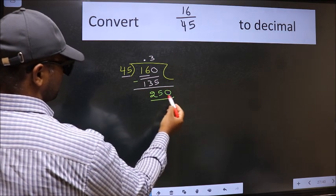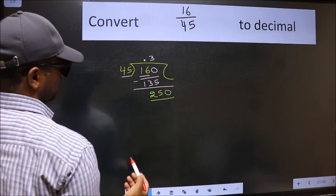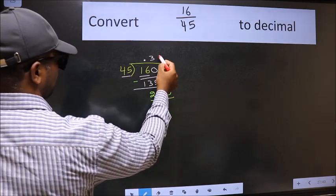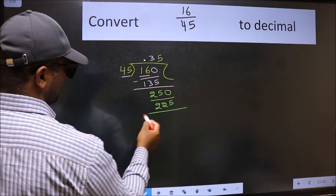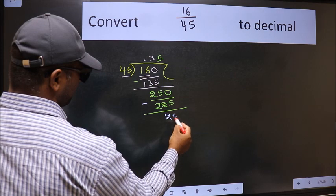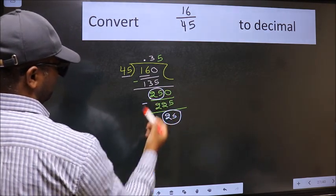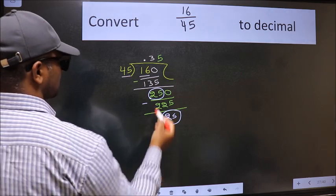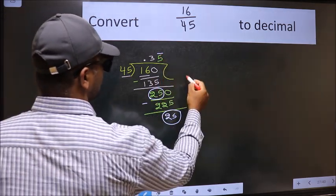Now we should subtract. We got 25 again. Earlier also we got 25. That means we get bar on this number. Therefore, the decimal of 16 by 45 is this one.